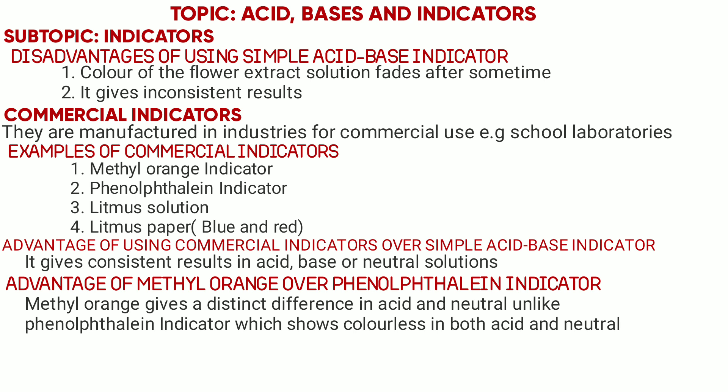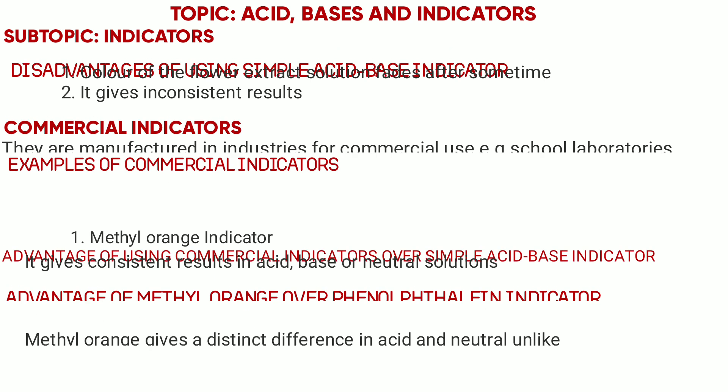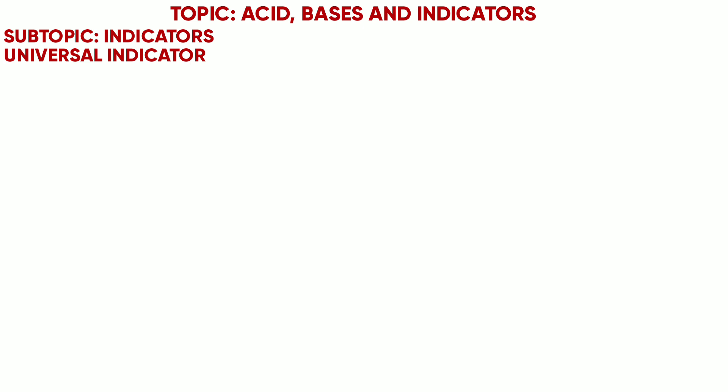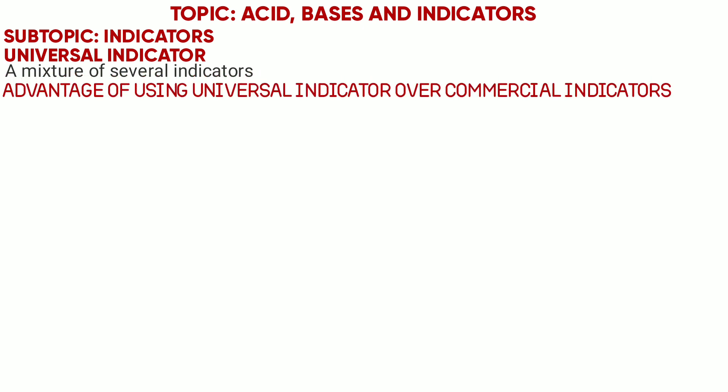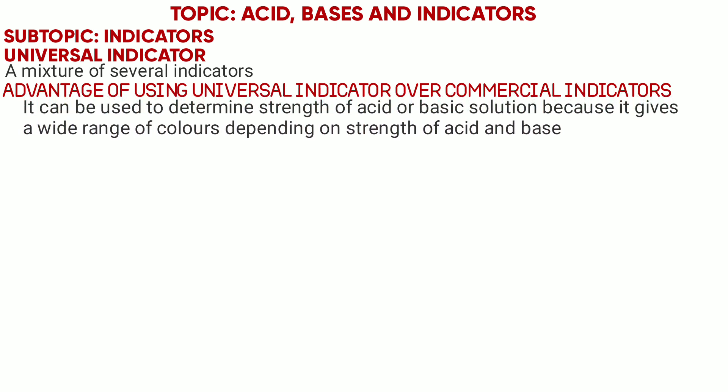Next we look at the Universal Indicator. A Universal Indicator is a mixture of several indicators. Its advantage over commercial indicators is that it can be used to determine the strength of an acid and base, because it gives a wide range of colors depending on the strength of the acid and base.